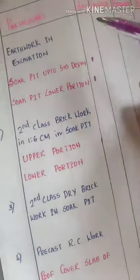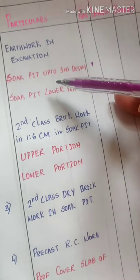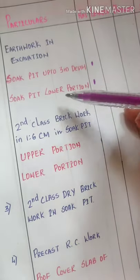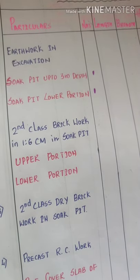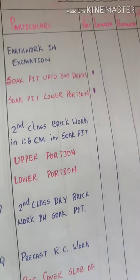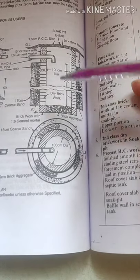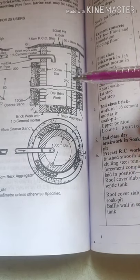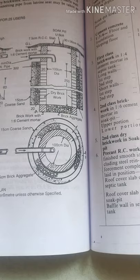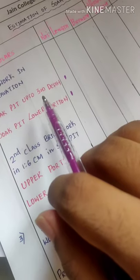The first quantity I am going to look at is earthwork in excavation. We have soak pit up to a depth of 3 meters and the soak pit lower portion. I am going to calculate the earthwork in two different parts, because the soak pit is of different diameters — up till 3 meter depth it is one diameter and beyond that it is a different diameter. So the earthwork calculation will be in two different parts. Soak pit up to 3 meter depth: